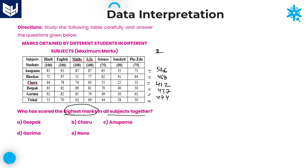These are the total marks for all students. Observing the values: who got the highest marks in all subjects together? Only one person is above 500 — that is Anupama with 526 marks. Anupama is the right answer, Option C. And lowest marks are for Vishal with 361.